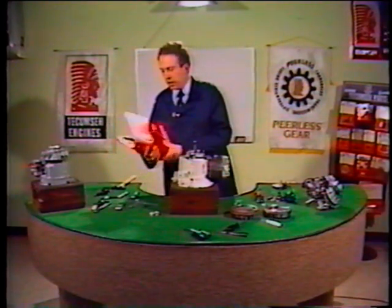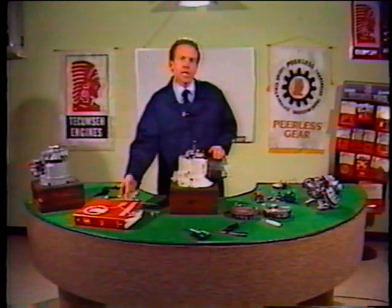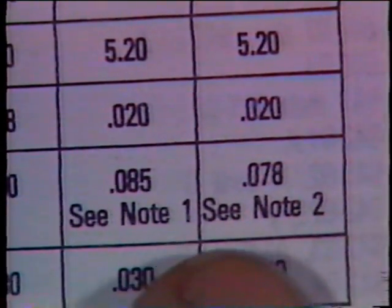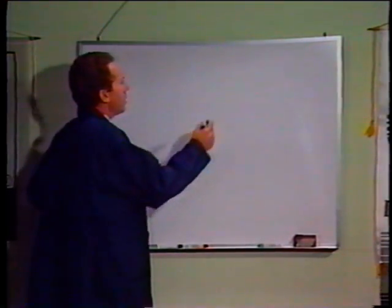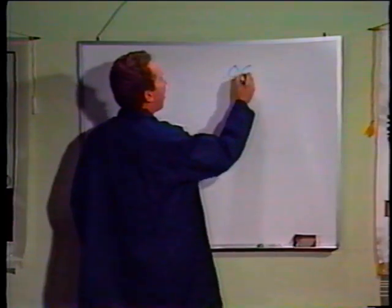An important thing to keep in mind is that not all engines have a point setting of 20 thousandths. Let's take a look in the two cycle book to show you an example of that. As you scan the two cycle book, you will notice that not all point settings are 20 thousandths. Let's take a few moments and talk about point setting as it relates to timing.